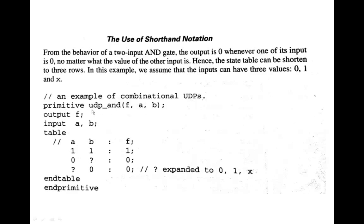This example shows how we are using shorthand notation. The primitive, the word primitive, that is how we start the primitive with a keyword primitive. UDP underscore AND within parenthesis portlist output f input a comma b, table and end table in between. For a given 11 combination output is 1. One input is 0, the other could be a 0 or 1 or it could be an x unknown value. So whatever the case, if one input is 0 then output will be 0.